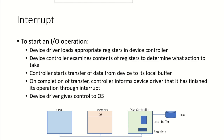If any device wants to start an input/output operation, the device driver — the program managing and communicating with the disk controller — will load the appropriate registers in the device controller. The controller will then examine the contents of these registers to determine what action is to be taken: is it a read or a write, how much data, what is the size of the data to be transferred, and what is the starting address in memory where that data has to be read from or written to.